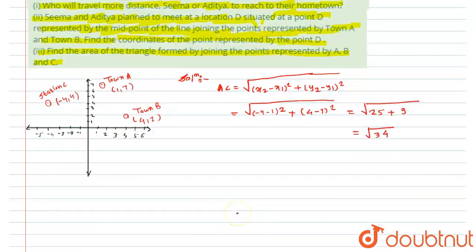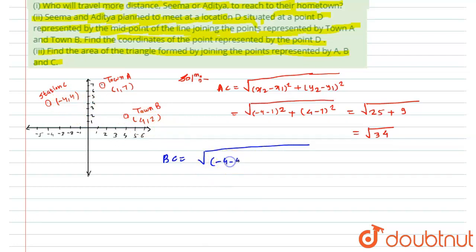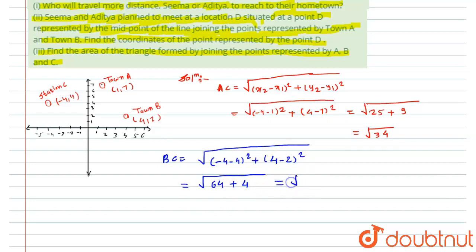Now calculating BC using the same formula: under root of (x2 minus x1) squared plus (y2 minus y1) squared. Substituting: under root of (−4 minus 4) squared plus (4 minus 2) squared, equals under root of (−8) squared plus (2) squared, which equals under root of 64 plus 4, giving under root 68. Comparing AC and BC, BC is greater than AC.